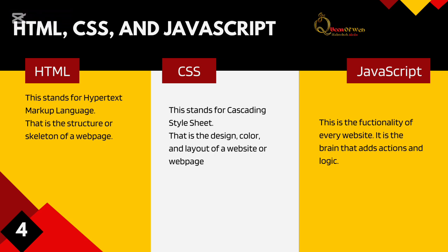JavaScript is what gives a website its functionality — it is the brain that adds actions and logic. Think of that robot you have created: you gave it a skeleton with HTML and added flesh with CSS to make it look like a white American or an African — that is CSS.